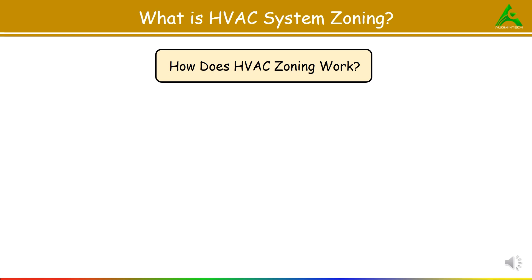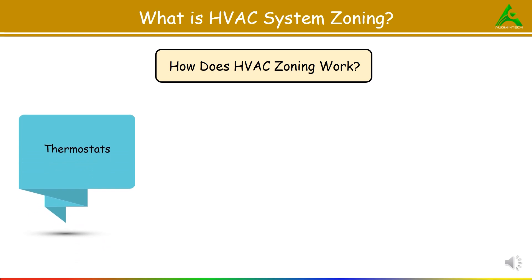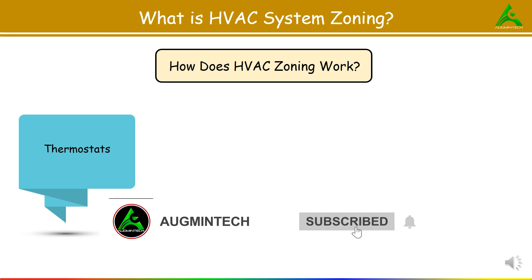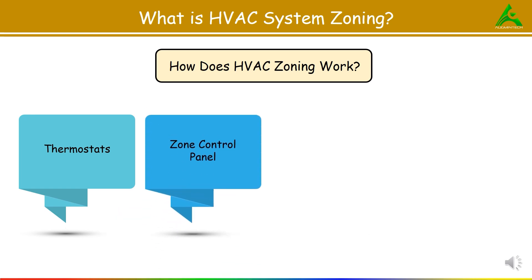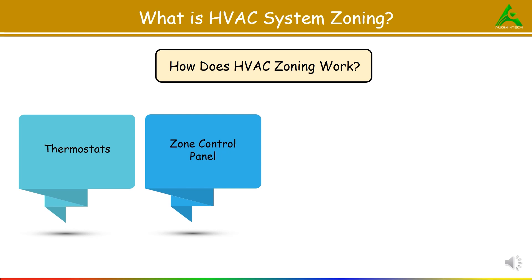Now the next question is how does HVAC zoning work? We will discuss each step. First, remember the thermostat — each zone has a thermostat to monitor and control the temperature. Thermostats basically send signals to the zone control panel when heating or cooling is needed. Then the next one is the zone control panel, which acts as the system brain managing information from the thermostats.